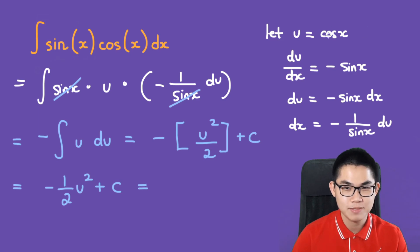And the final step is to substitute cosine of x back into u. So we have negative 1 over 2 times cosine of x to the power of 2 plus C.